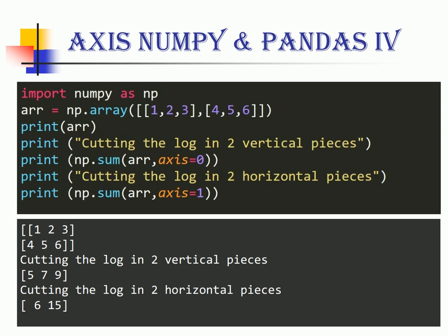When I do axis equal to one, I am chopping the array into two horizontal parts and calculating the sum for each individual part. In our case the first part would be the sum of one, two, three which is six and the second part is the sum of four, five, six which is fifteen. This is how axis is used in numpy.